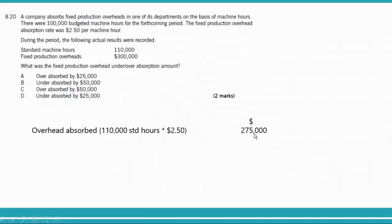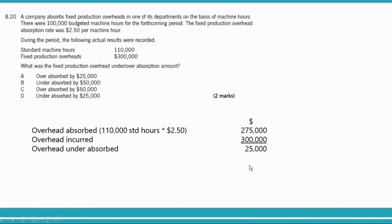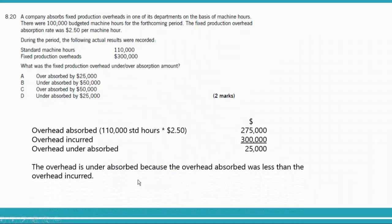Absorbed overheads are $275,000 and actual overheads incurred are $300,000. The difference is $25,000. Since actual overheads are more than absorbed overheads, and absorbed overheads are less, this is a case of under absorption — under absorbed by $25,000. The answer is option D.